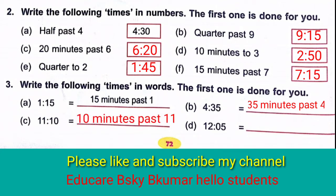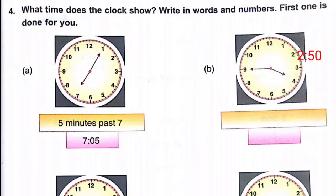Write all times properly using 'past' or 'to'. For example: 5 minutes past seven is 7:05. 5 minutes past ten is 10:05. Quarter to four means 3:45.